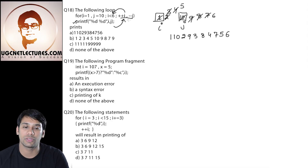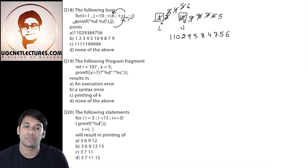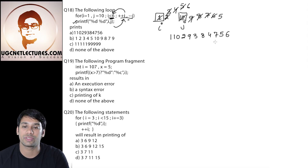Then again it will go to this increment statement. It will make i as 6 and j as 5. Now when the value of i is 6, this condition is false. So because this condition is false, we will come out of this loop. So the output is 1 0 2 9 3 8 4 7 5 6, which is option number A.